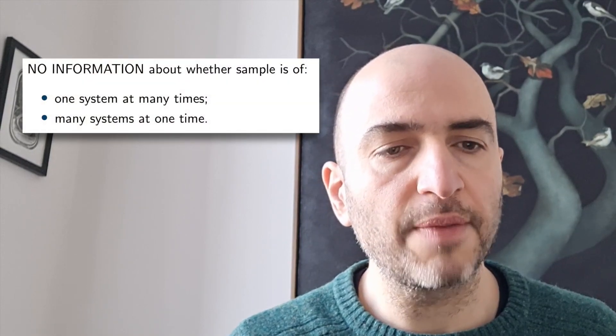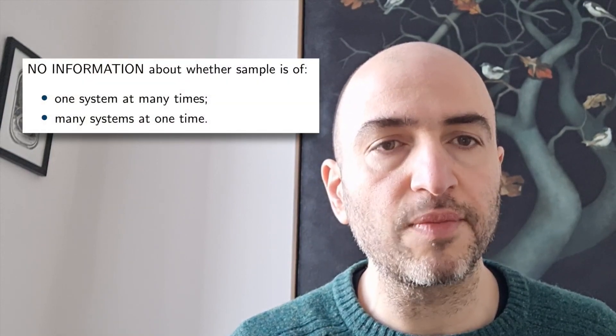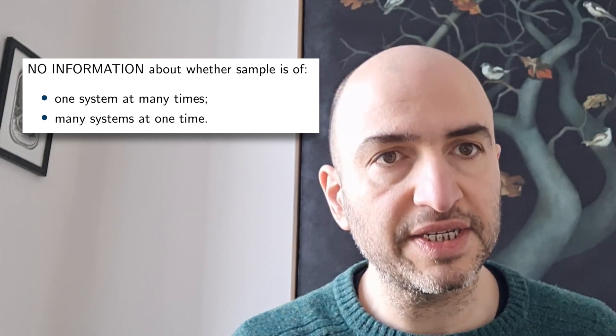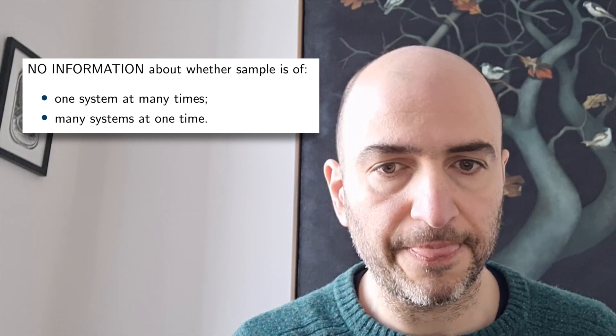Now, there's no information here about whether the sample is drawn from one system at many different times, or from many systems at one time. So in order to address the ergodicity question, we will somehow have to disentangle time and systems. This became an issue two centuries later, when randomness was added to physics to form the field of statistical physics.